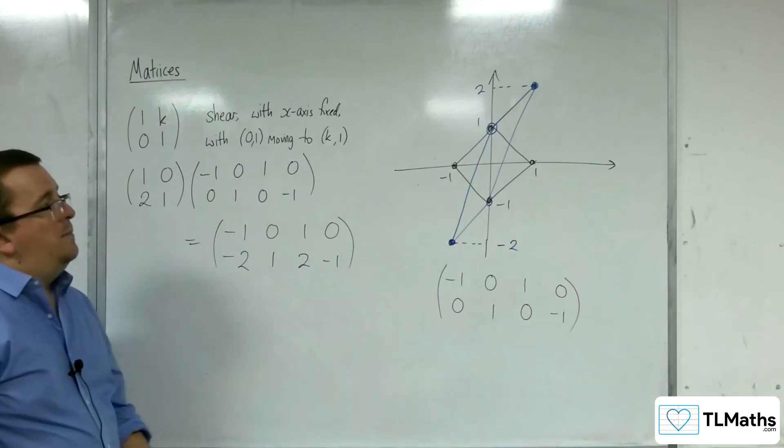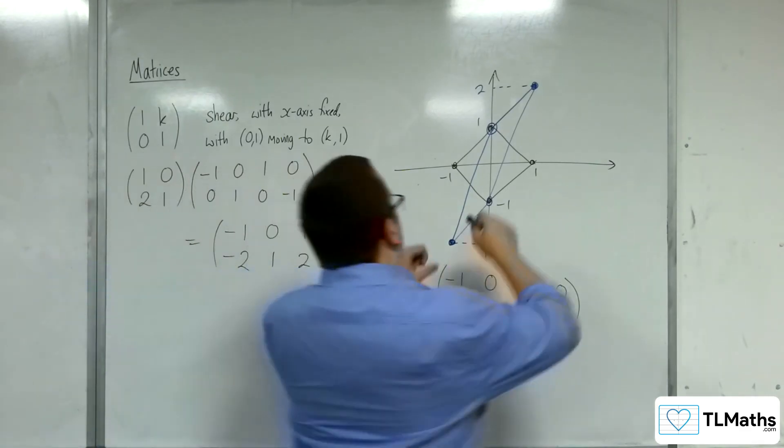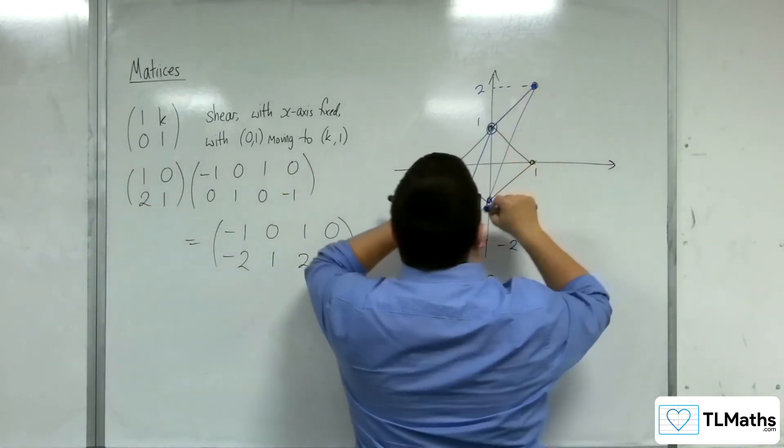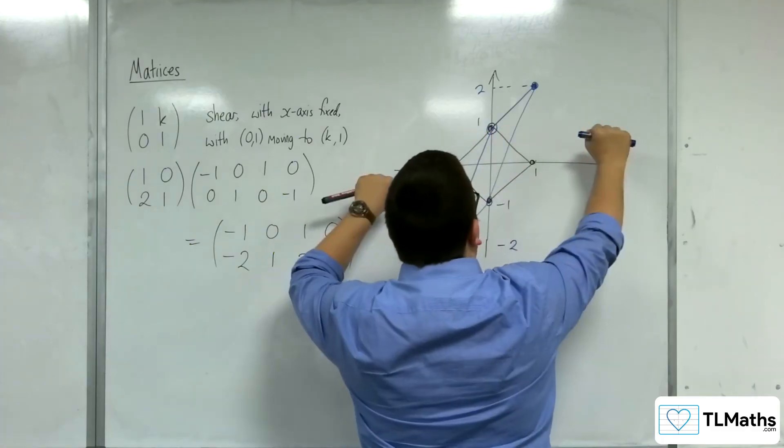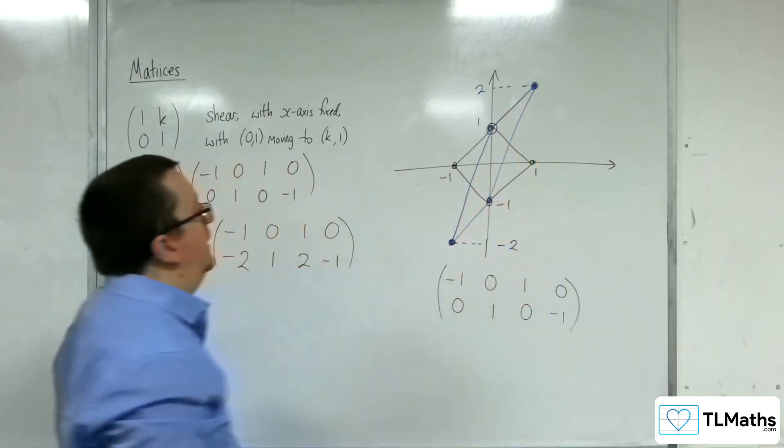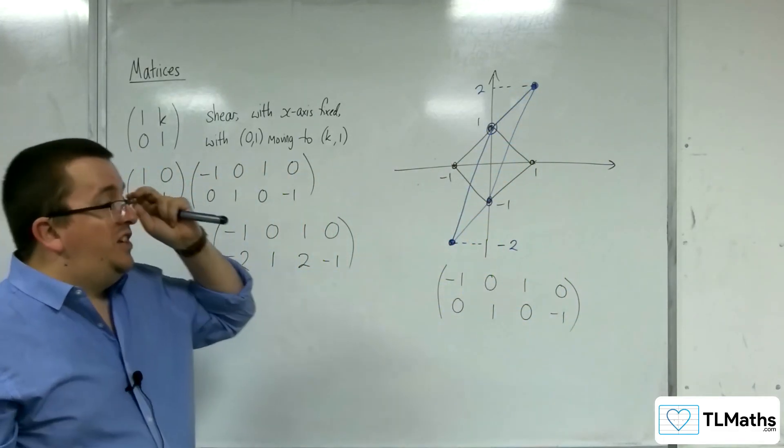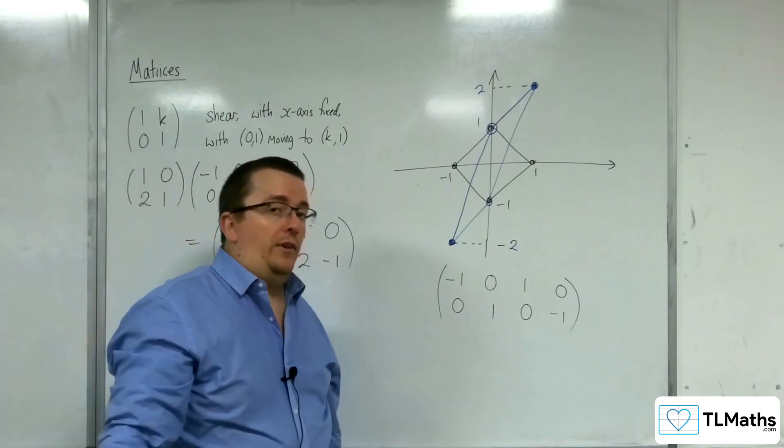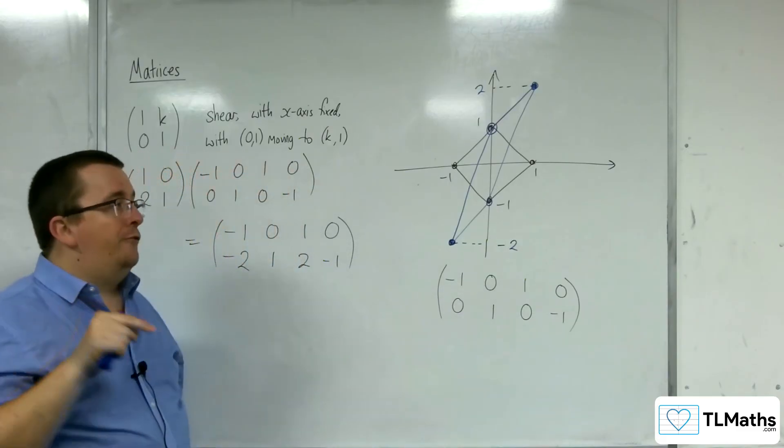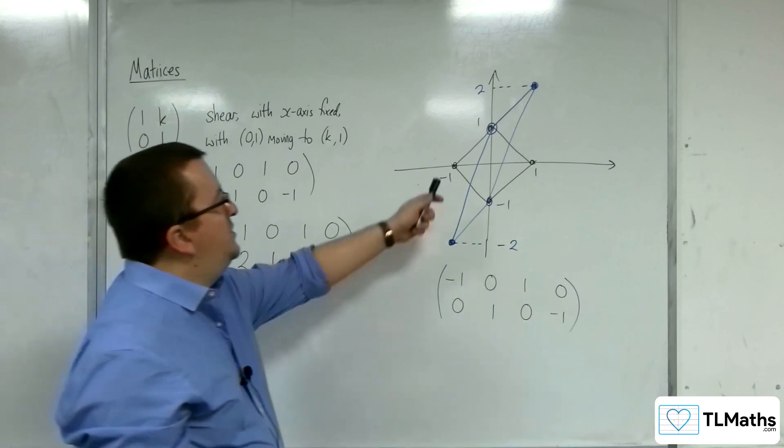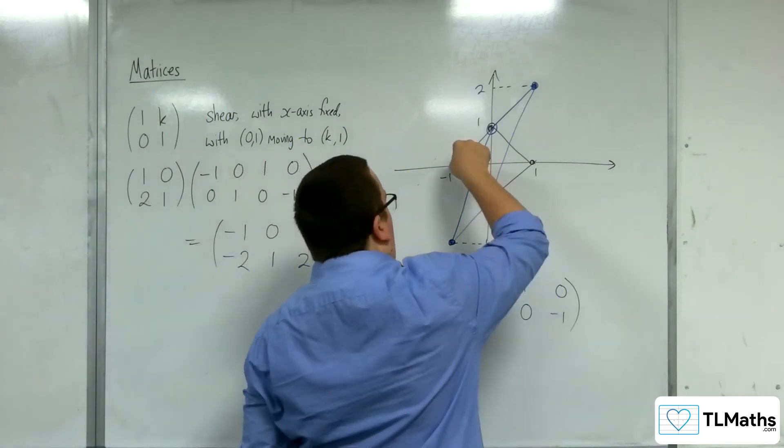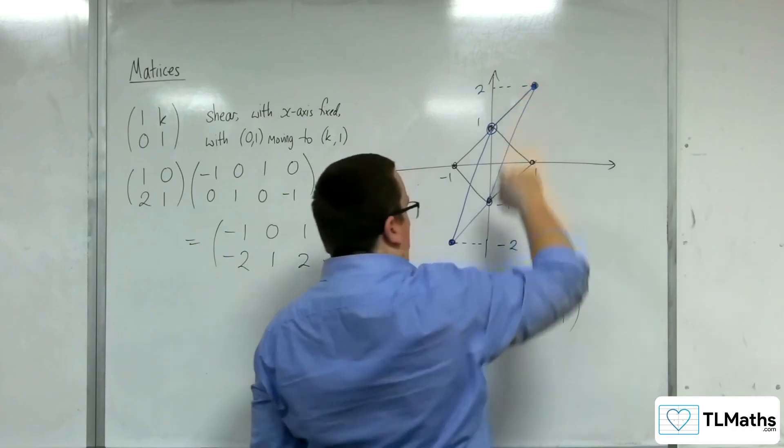So this time, our rhombus has been sheared in the other direction. So before it was sheared horizontally. Now it's vertically. And notice how the points that are on the y-axis this time have remained fixed. Whereas points that are to the left of the y-axis have gone down. And points to the right have gone up.